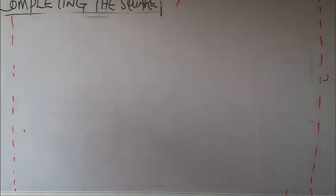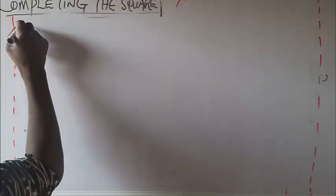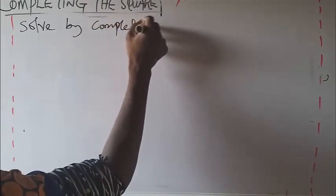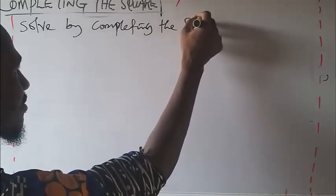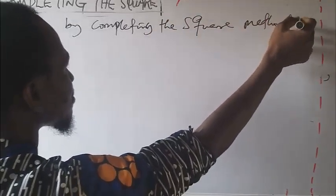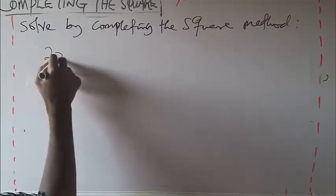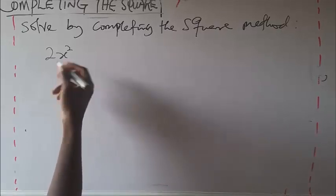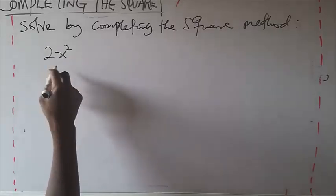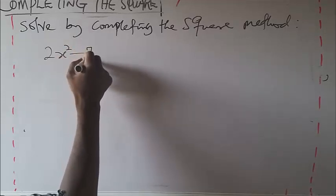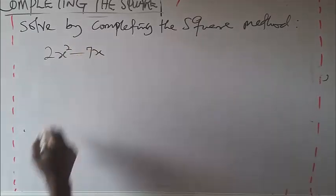Okay, let's say the example says solve by completing the square method. So they give us 2x squared minus 7x.